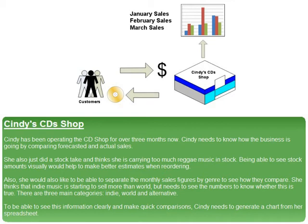There are 3 main categories: indie, world, and alternative. To be able to see this information clearly and make quick comparisons, Cindy needs to generate a chart from her spreadsheet.